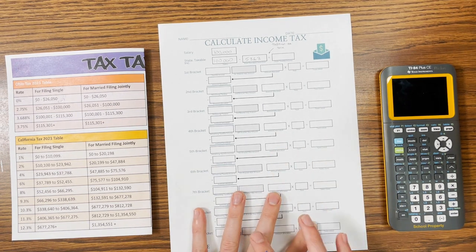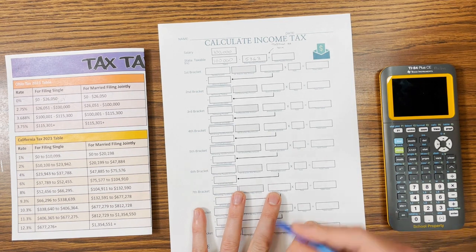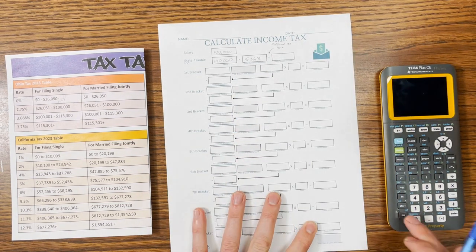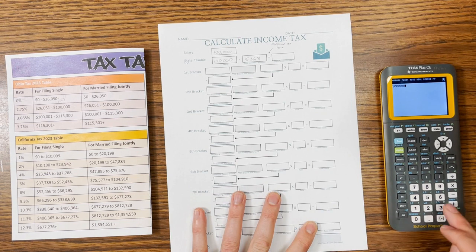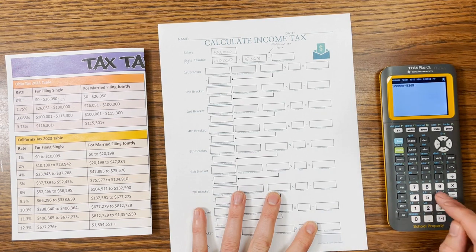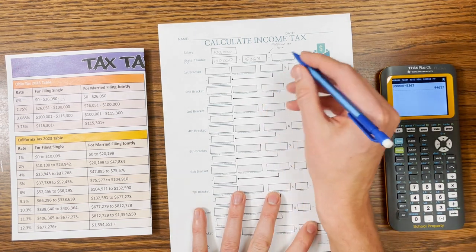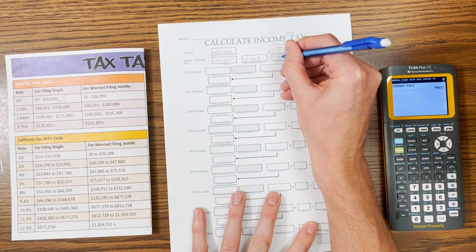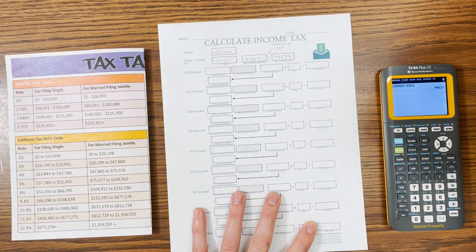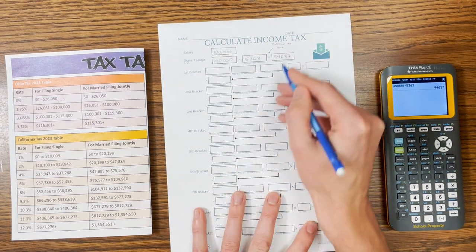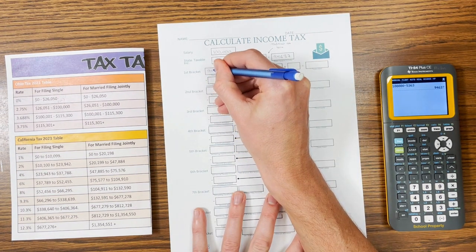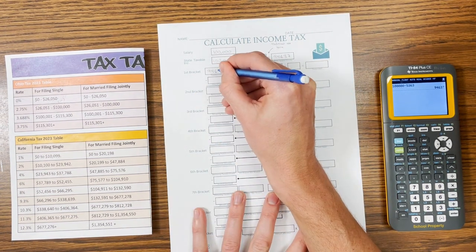For the sake of this demonstration, I'm not going to have any traditional deduction. So we subtract the two of those, $100,000 minus $5,363, and we have $94,637 of taxable income. That comes straight down here, so $94,637.